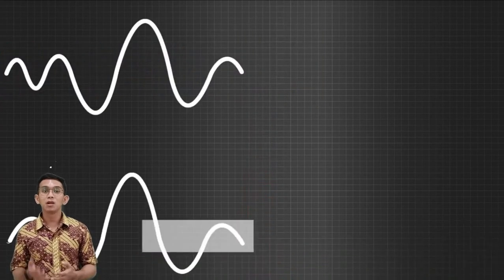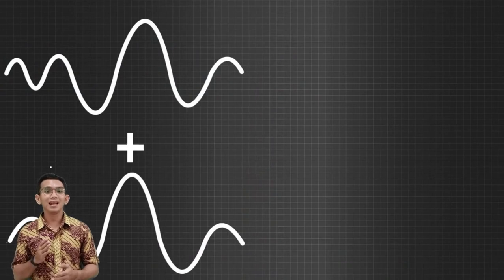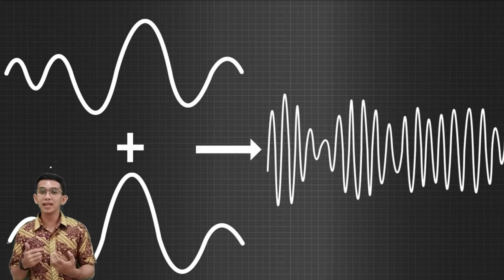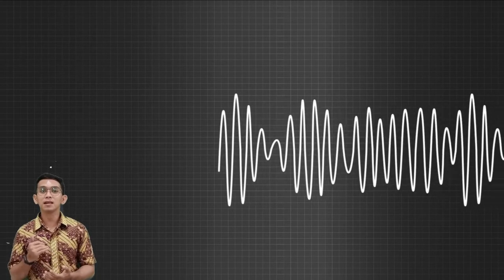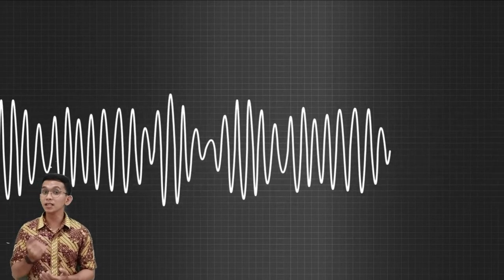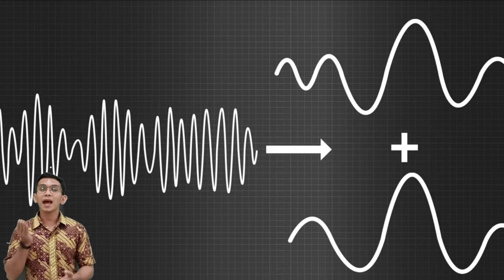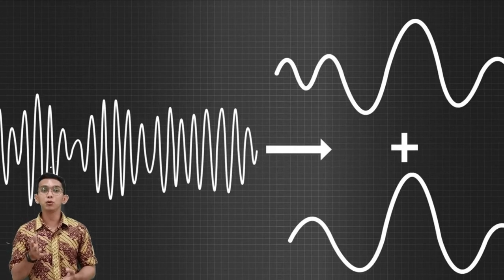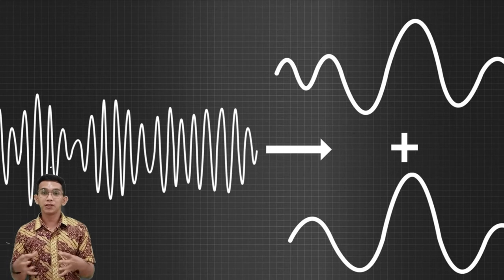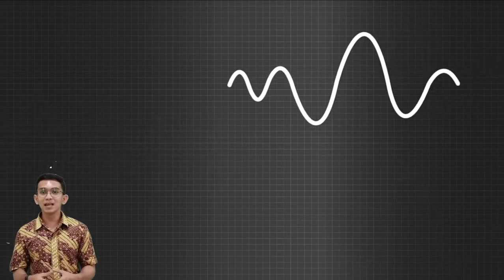This technique is known as quadrature amplitude modulation. To understand QAM in an easy way, let's take two analog signals. The beauty of QAM is that you can modulate these two different signals as a single signal and then transmit it. Then at the receiver end, you'll be able to separate out the original signals, thereby saving the bandwidth.